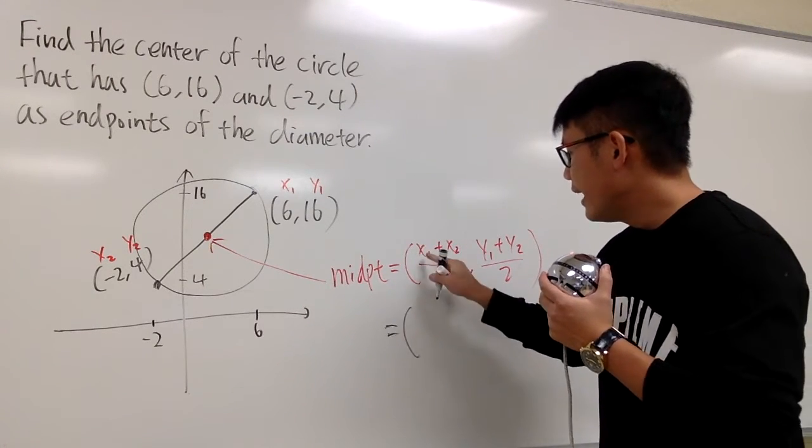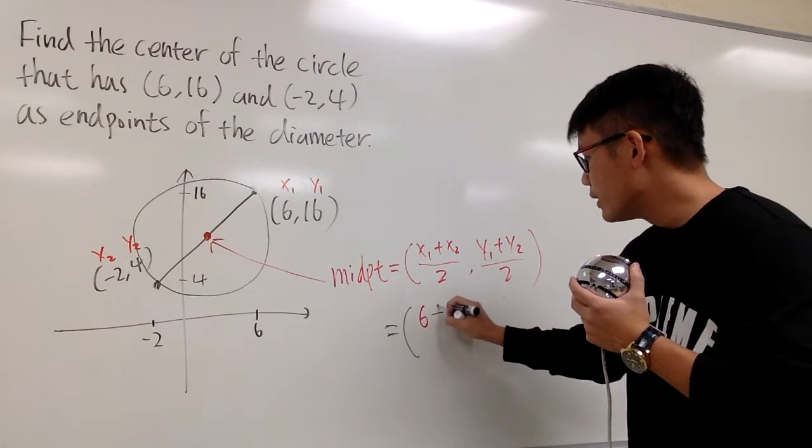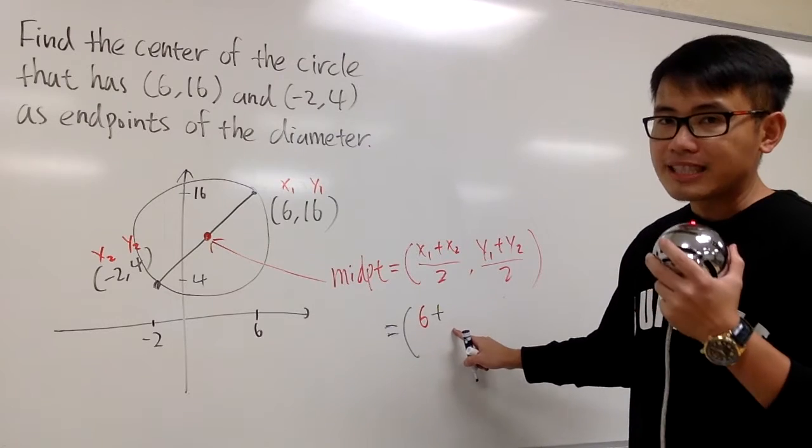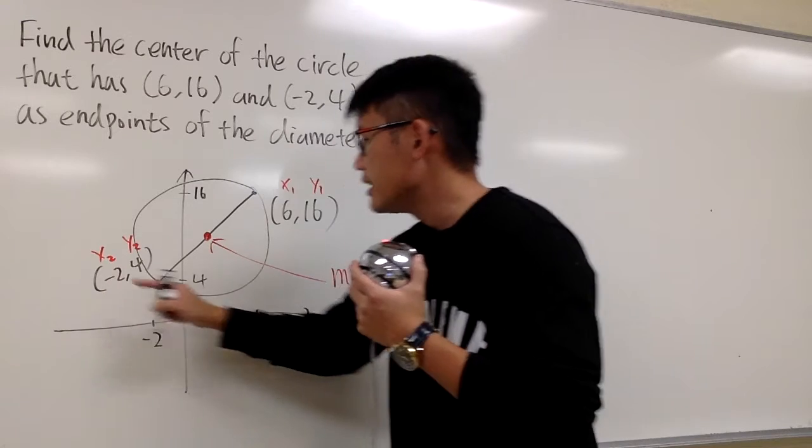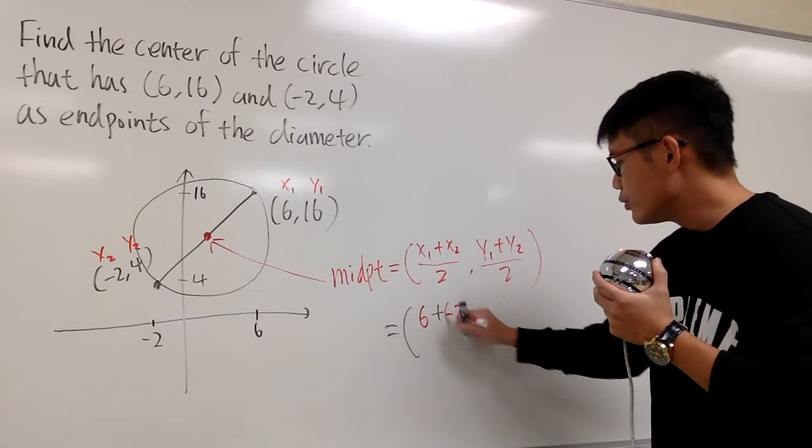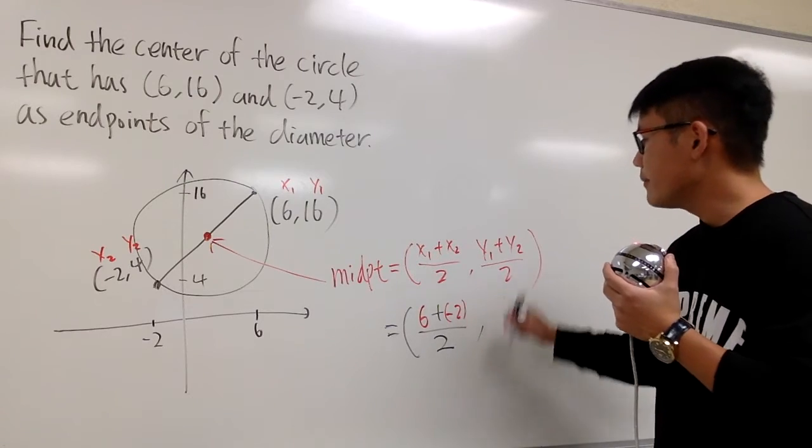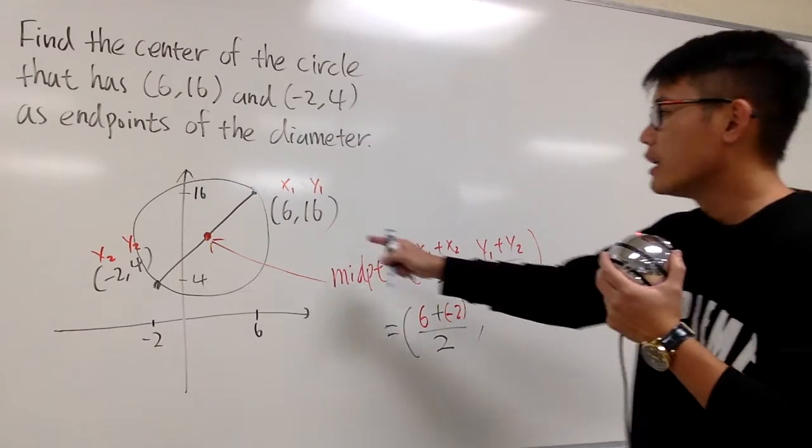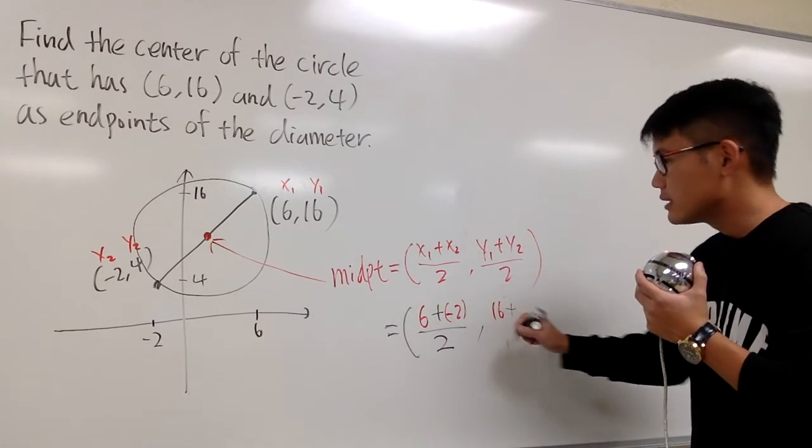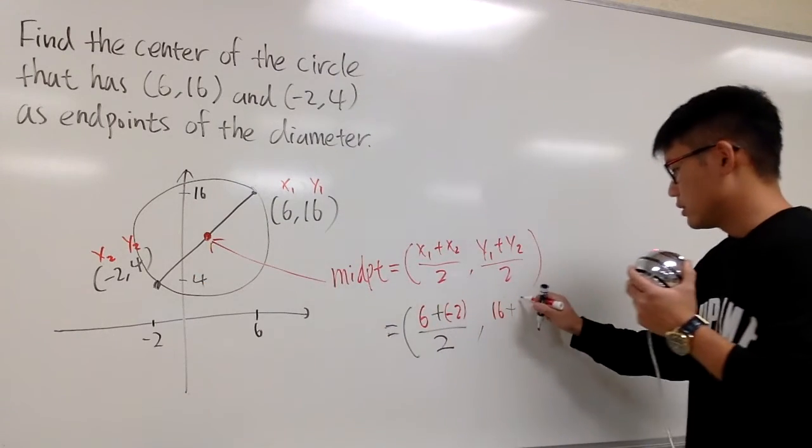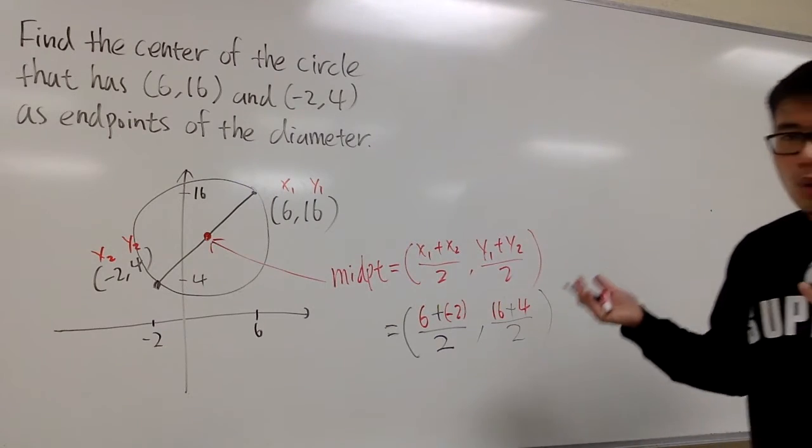For this one, we are going to get x1 is 6. So, let me put down 6. And then, we add it with, we always add, but sometimes the x value can be negative. Because right now, x2 is negative 2. So, we add negative 2 to that. And this is all over 2, the y coordinate is that we do y1 plus y2. So, we have 16 plus 4. And then, divided by 2. And this is the work that we have to do.